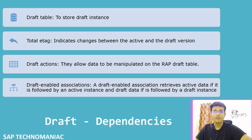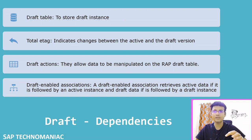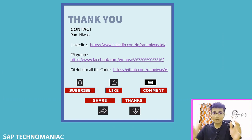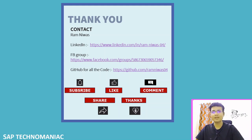Till now we have added 'with draft' in our business object and removed all errors. Our focus was to remove the errors, but now we need to understand what fields are in the draft table, why we use the total etag field, the significance of draft actions and when they are used by the framework, and how draft-enabled associations work in the backend. We will discuss all these things in the next video. This was a short video — after a long time I'm creating videos; I took a pause for three or four months. Please like this video, share it with others. Thank you and happy learning.